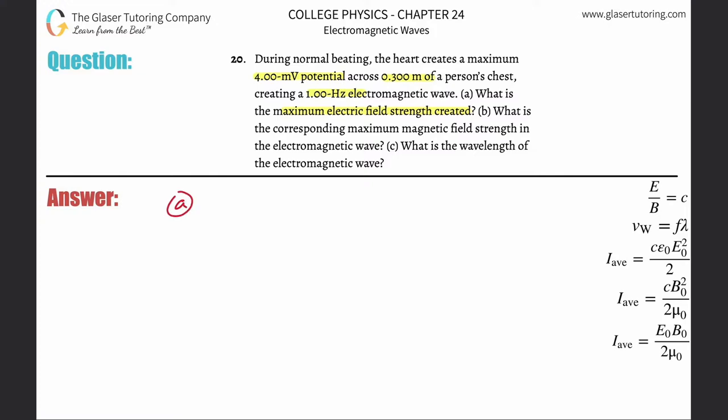We need a formula that goes back into a couple of the past chapters. We know the electric field strength is equal to the potential applied, or the voltage, divided by the distance over which that potential is applied. You might have seen the formula as V equals E times d.